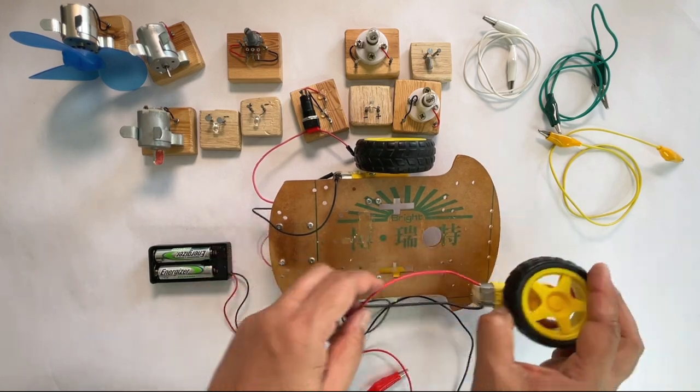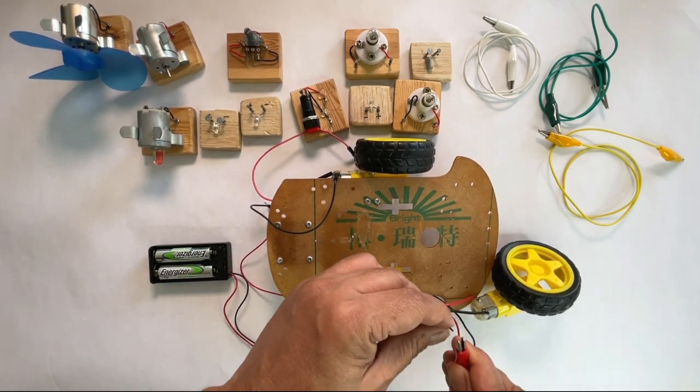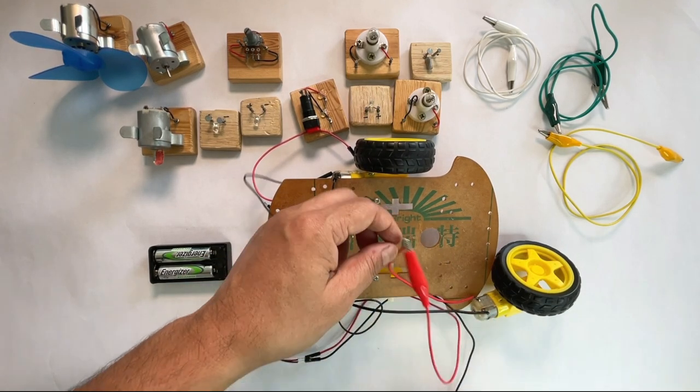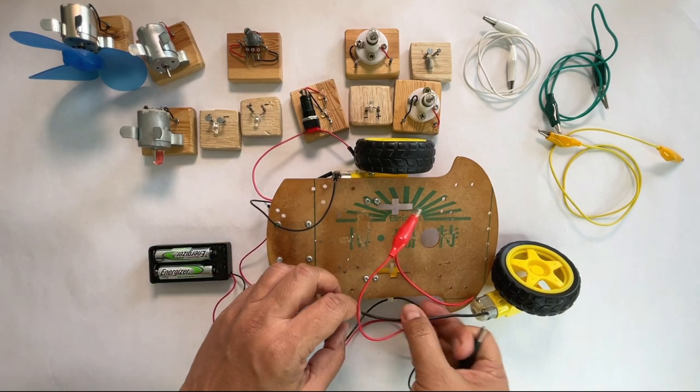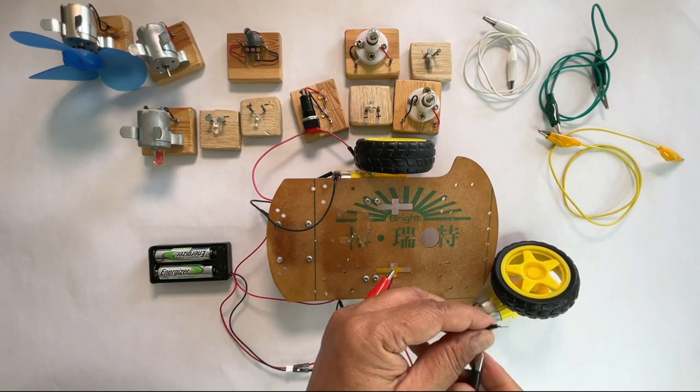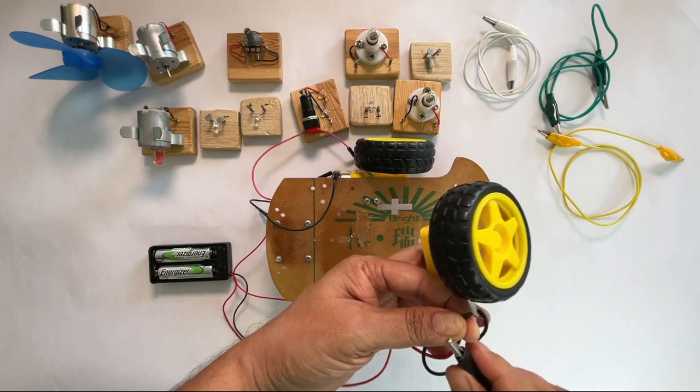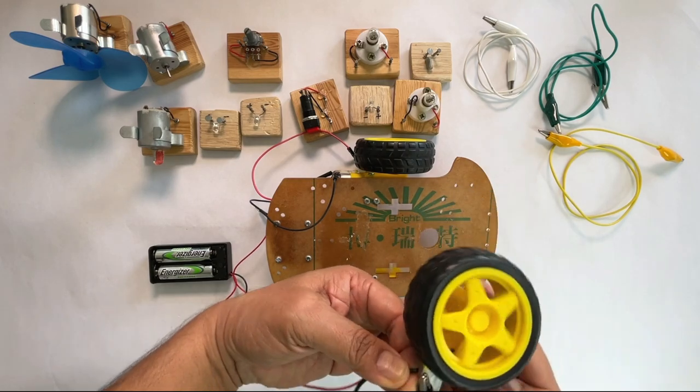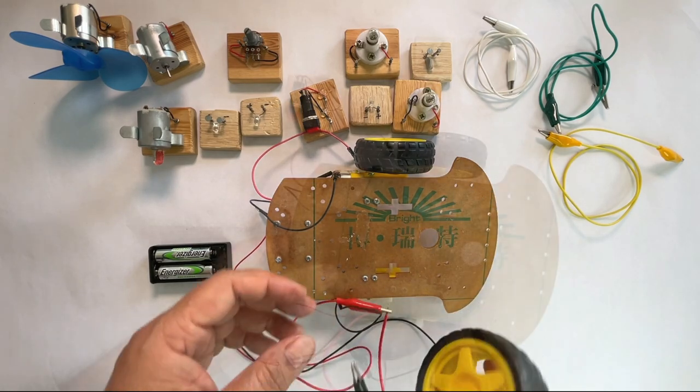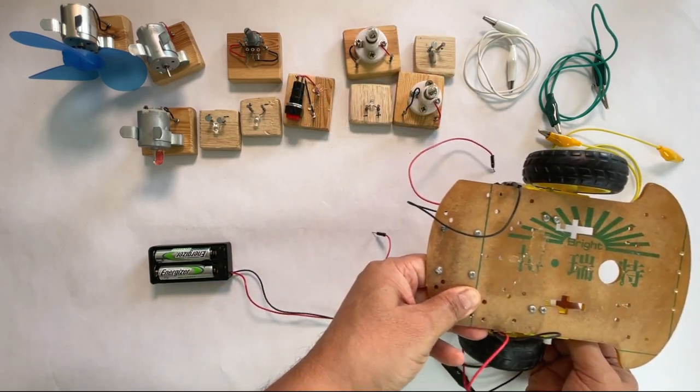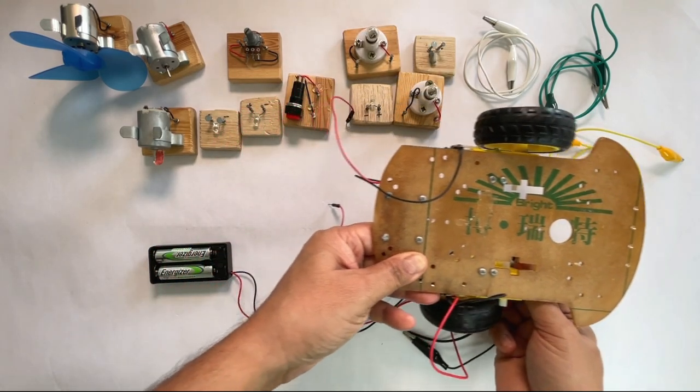Let's connect the motor to the battery. Connect the positive terminal of the battery to one of the terminals of the motor. Connect the negative terminal of the battery to the other terminal of the motor. The wheel attached to the motor starts to turn. Imagine, if the motor is attached here, the car is going in reverse direction.